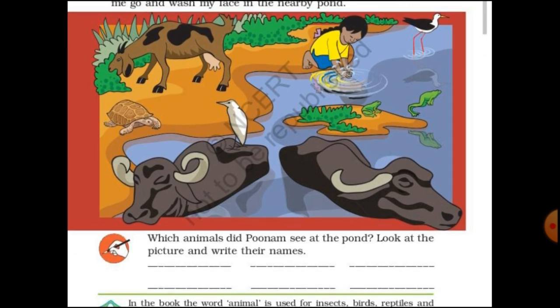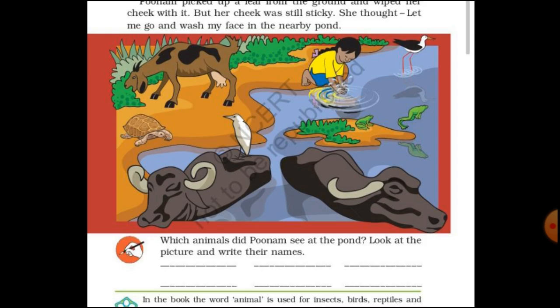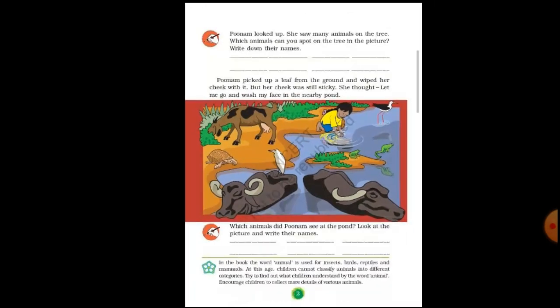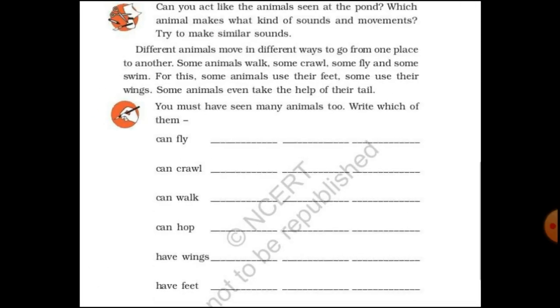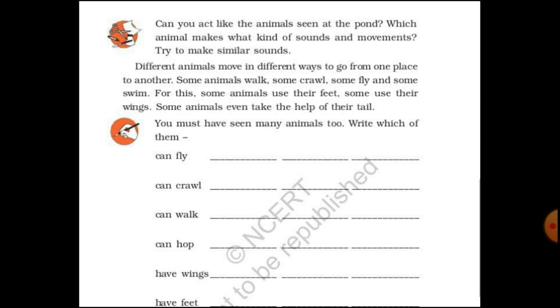Which animals did Poonam see at the pond? Look at the picture and write their names. (Urdu: Jab wo pond ke paas gayi to use kaun kaun se animals dikhe?) In this picture you will see animals like buffalo, turtle, frog, and others. Look at these animals and fill in their names.